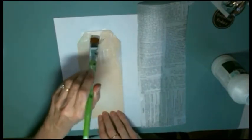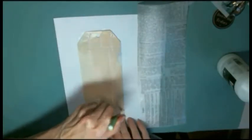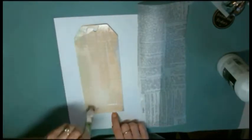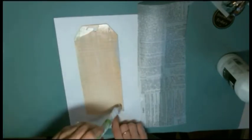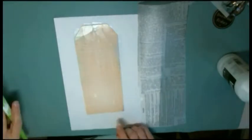First thing I'm going to do is paint the tag with some matte medium. I'm using that as a glue. You could use decoupage if you have it or actually I've glued it down with gesso before. So whatever you have will probably work.